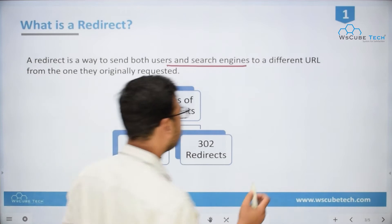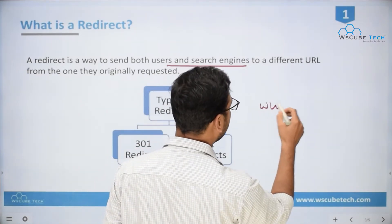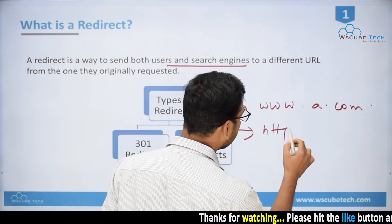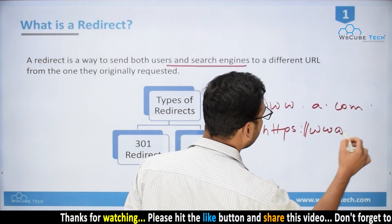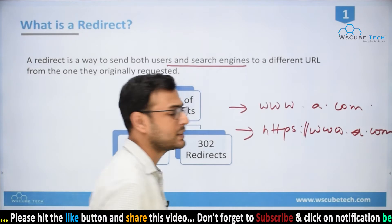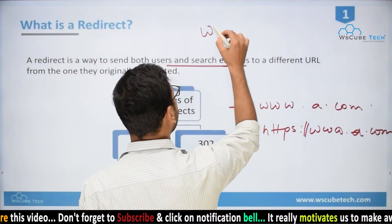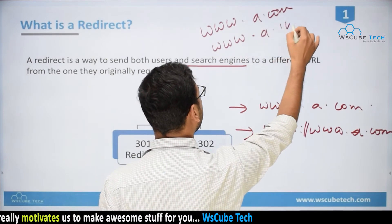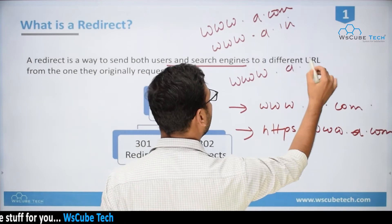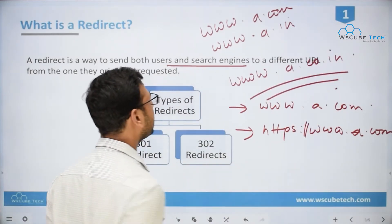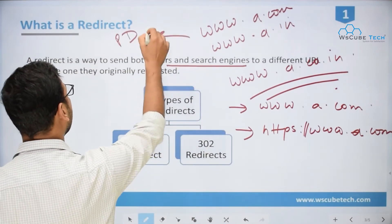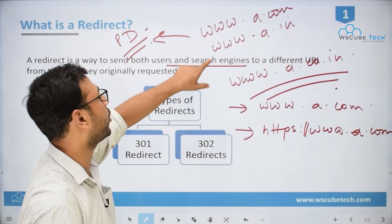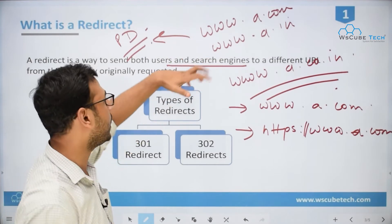For example, if a user goes to the browser and types www.a.com but when the page loads it becomes https://www.a.com — this is basically a redirection. It can also be something like having a domain a.com, and if you've also purchased a.in or a.go.in, you'd want those URLs to point to your primary website. This is basically redirection.